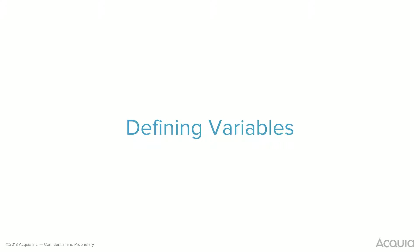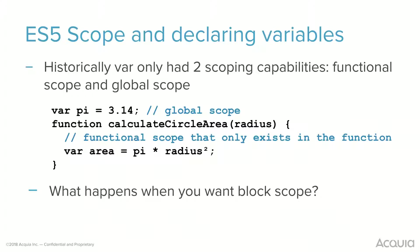First, defining variables. How have we traditionally done this in ES5? Historically, VAR has only had two scoping capabilities: functional scope and global scope. For example, VAR pi equals 3.14 is global scope, and then a function like calculateCircleArea with a radius parameter has functional scope that only exists within the function. So if you try to grab the area variable outside of that function, it would throw an error.